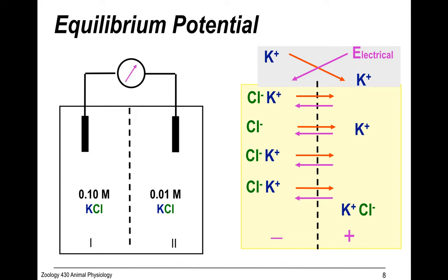You can then measure that voltage difference across the two sides. The equilibrium potential is the special term for the potential at which the chemical work balances the electrical work. This is the premise on which the Nernst equation is based — a balance between chemical and electrical work.